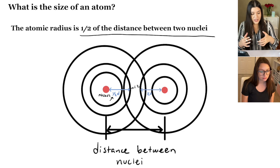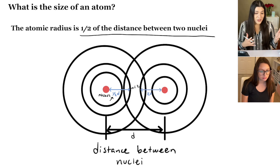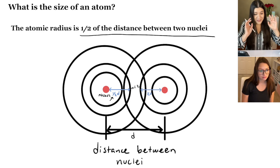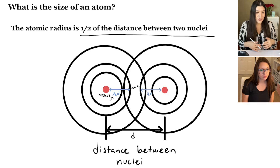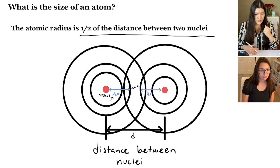Adding those together gives us the full distance between our nuclei. I know it sounds confusing, but really just think of atomic radius as the size of the atom — that's probably the simplest way to think about it, instead of having to go into specifics about how it's one half the distance between two nuclei. It's just the size of the atom.